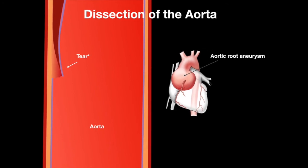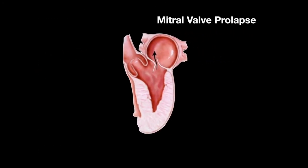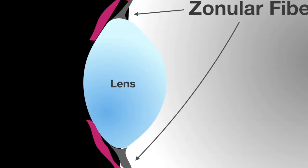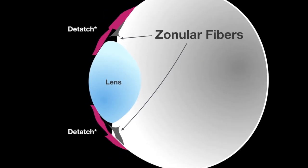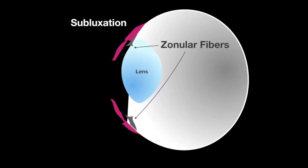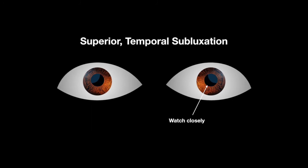These two conditions are symptomless, and they are the main cause of death. Mitral valve prolapse is also common. The lenses of the eye can detach from the zonular fibers — this is known as subluxation — and the lenses in individuals with Marfan syndrome are typically found in a superior and temporal position.